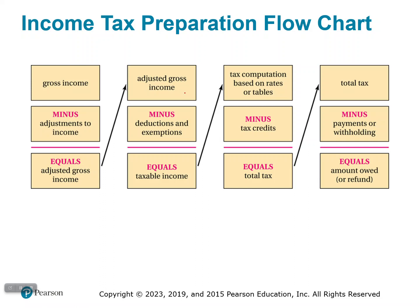We take our adjusted gross income and we look at deductions and exemptions. After we take care of deductions and exemptions from our adjusted gross income, this is the taxable income. So all of the money that we make, we adjust that a little bit, we take care of deductions and exemptions, and what remains — that's what we get taxed on.